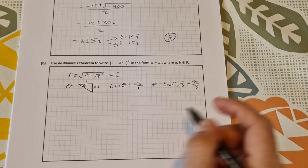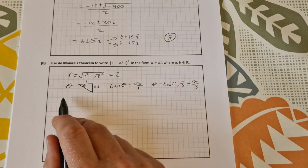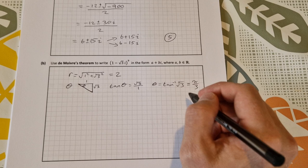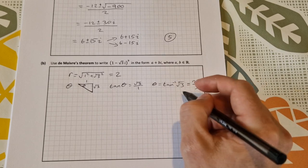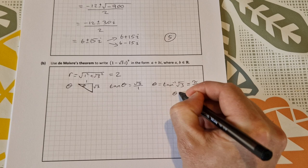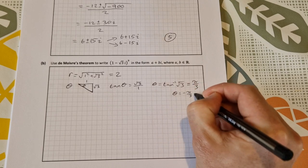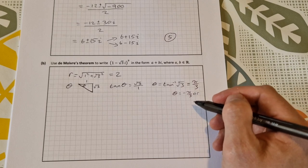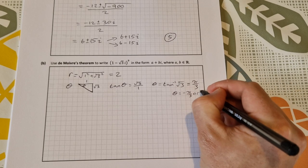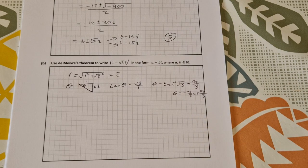Now, this is measuring from the negative side of the x-axis. So for our complex number in polar form, we're going to use theta equal to minus pi over 3 because we're working backwards. Or you could use 2 pi minus pi over 3, which is 5 pi over 3. They'll both give you the same solution. I'm going to use minus pi over 3 in this case, but you can use either one.